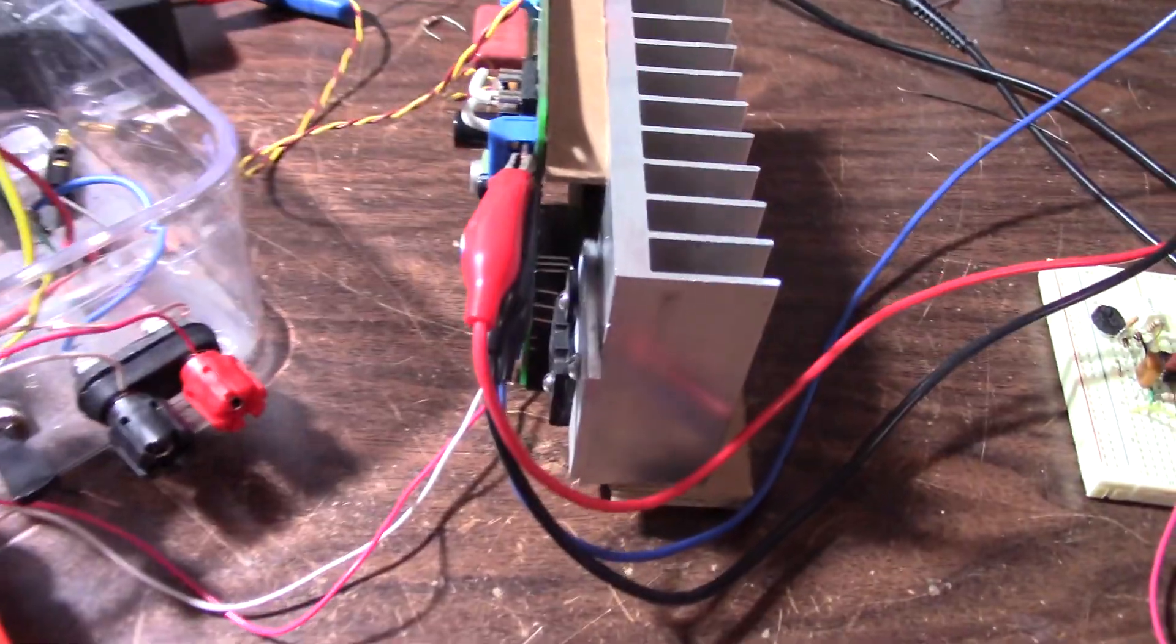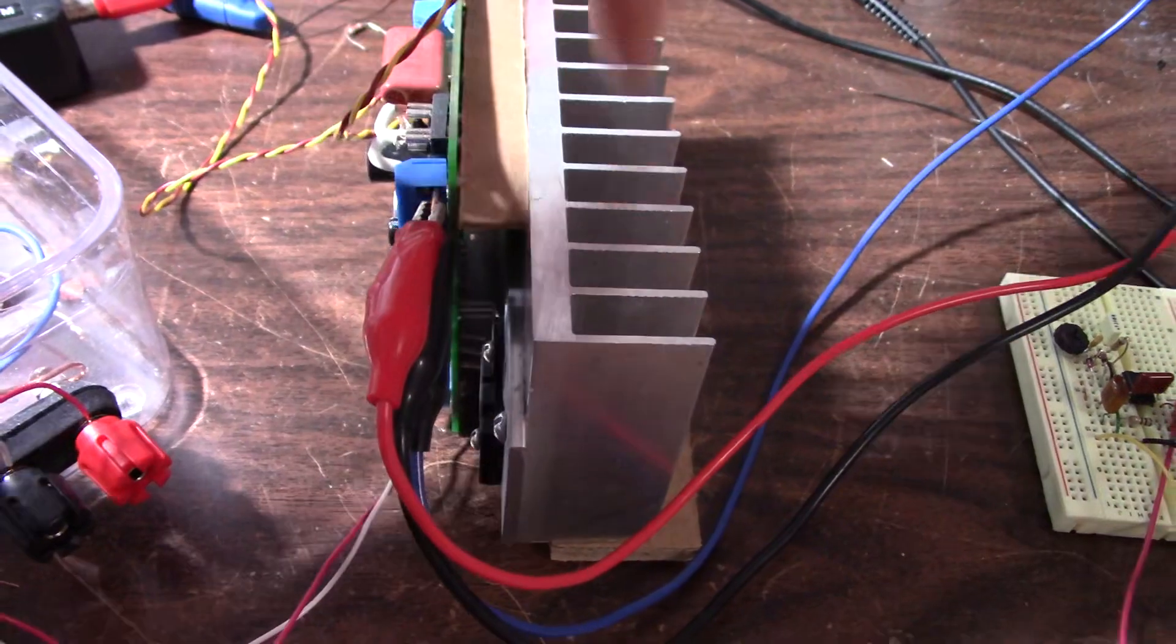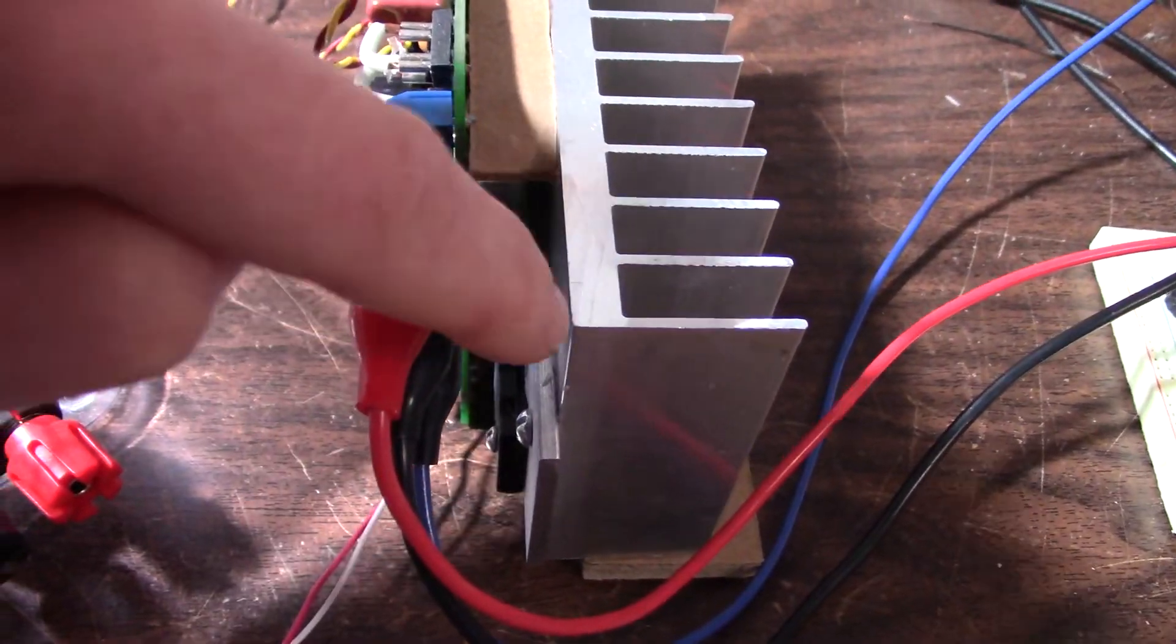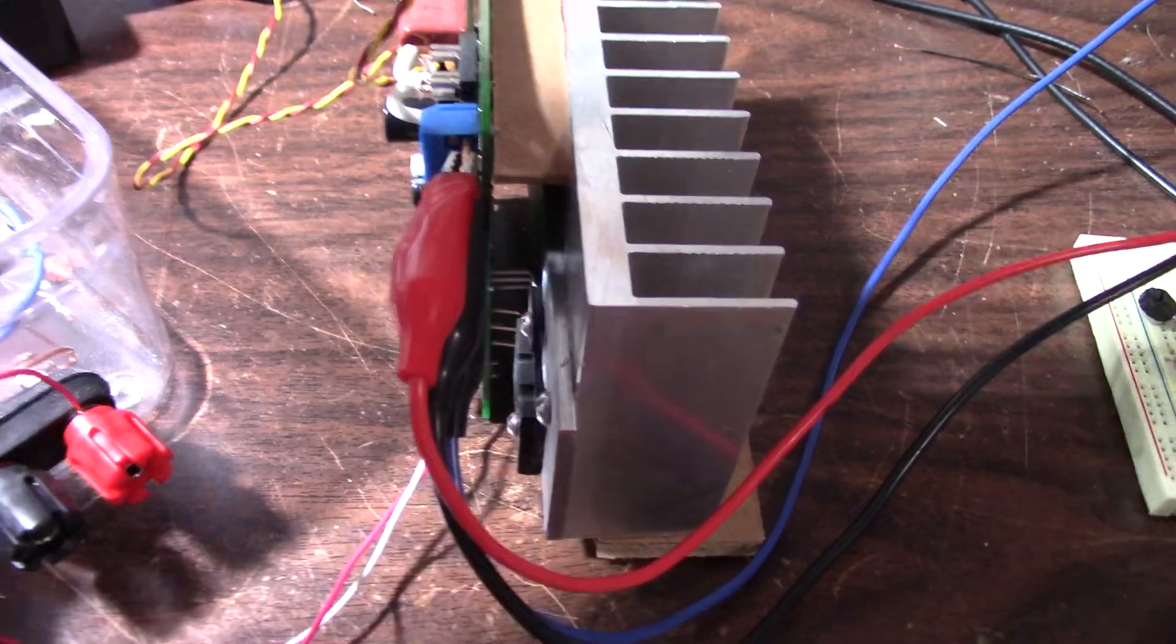But the main way that heat is removed is through convection. Not a lot of heat is going to radiate from this heat sink to the board, so it's not going to get that hot.